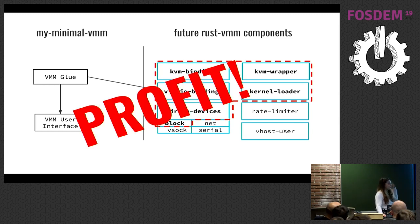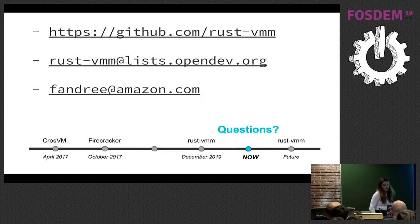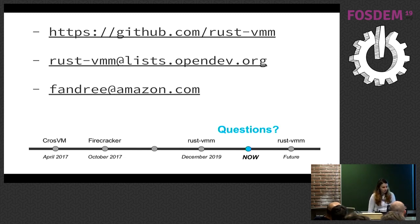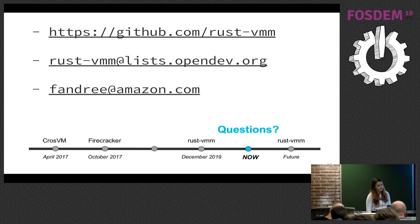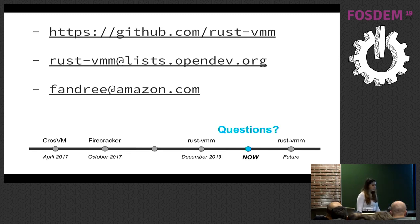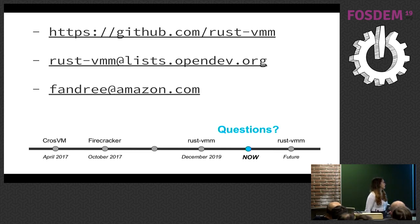There is only one thing left to do — profit. And that was all. The first link is the rust-vmm organization on GitHub. The second link will take you to the subscribe page for the rust-vmm email list. And the last one is my email address — if you have any questions you don't want to ask now, you can send me an email and I'll be happy to help. Thank you.